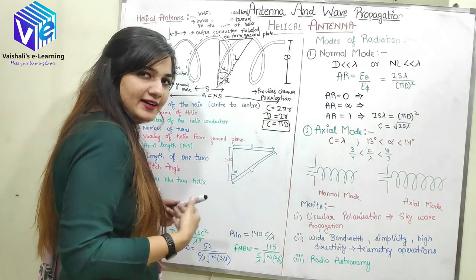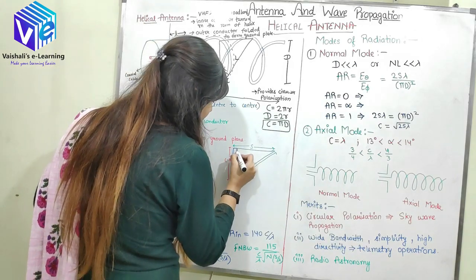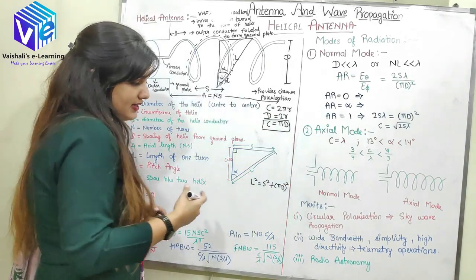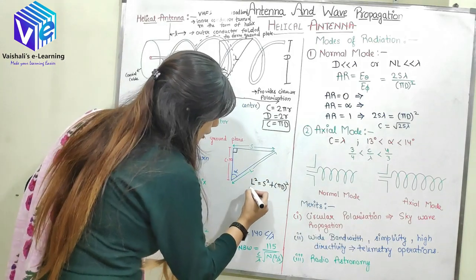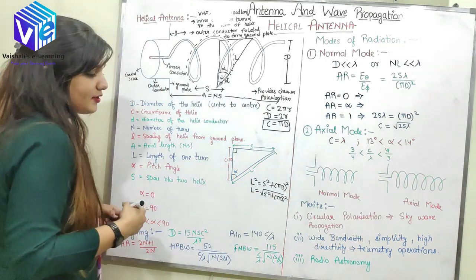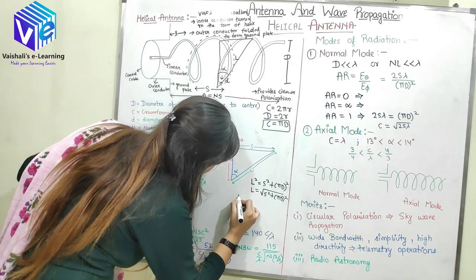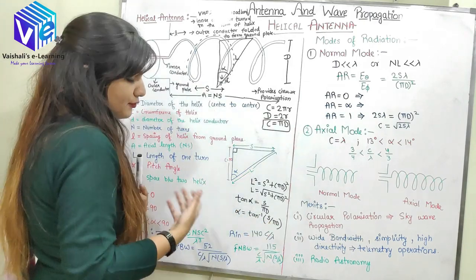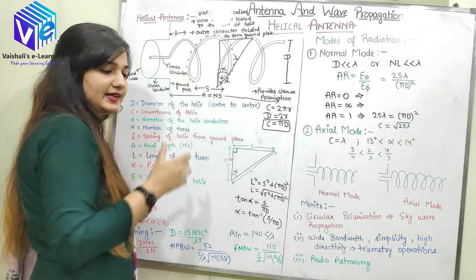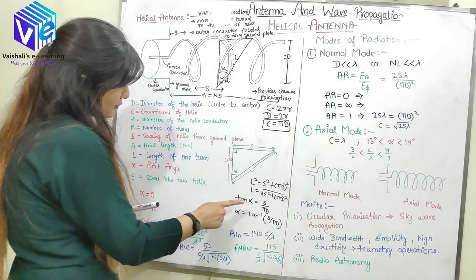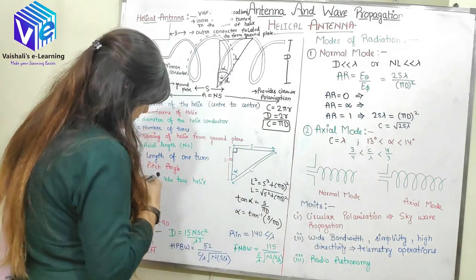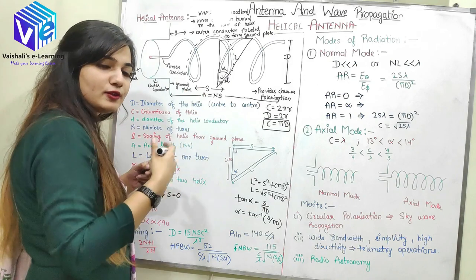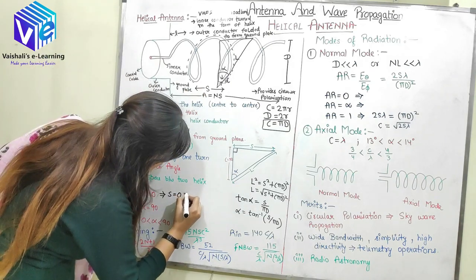From the right-angle triangle formed by S, πD, and L, tan(alpha) = S / (πD). Depending upon alpha, I can classify the helical antenna into various categories. The first case is when alpha equals 0, which means S equals 0 — the spacing between two turns is zero. In this case, the structure resembles a circular loop antenna of N turns.